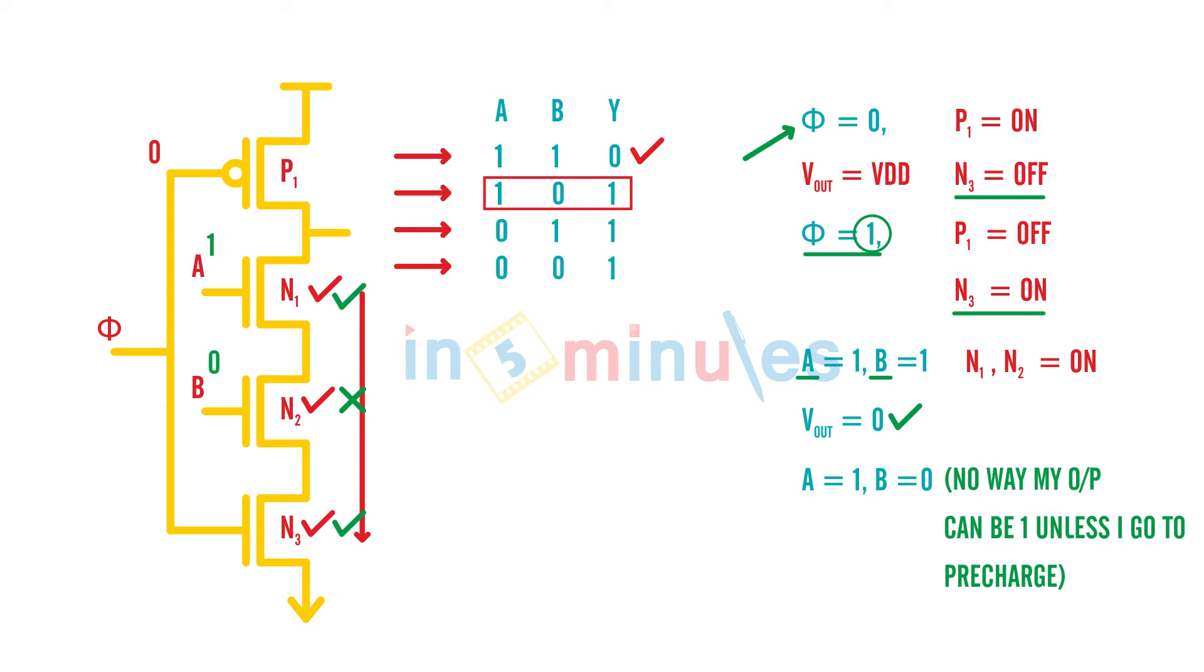And that's not the right way of doing it, because we need to evaluate our inputs in the evaluate phase. What does this say? This says that dynamic circuits have a major drawback of monotonicity, or monotonically rising inputs.